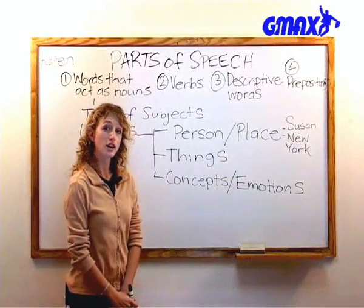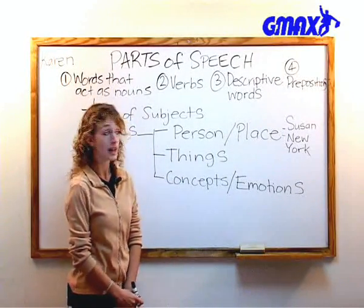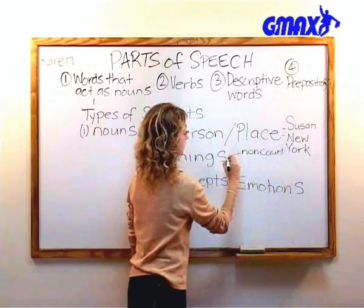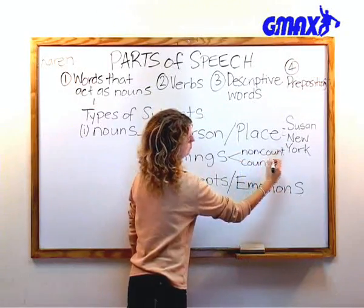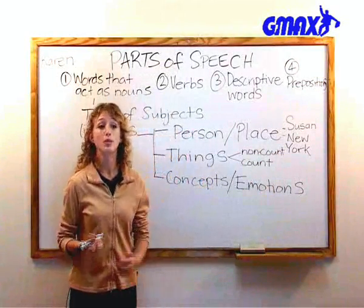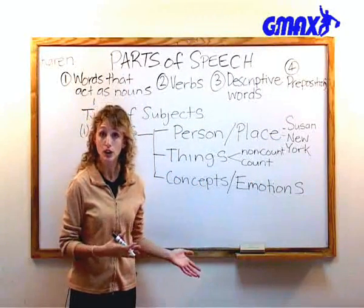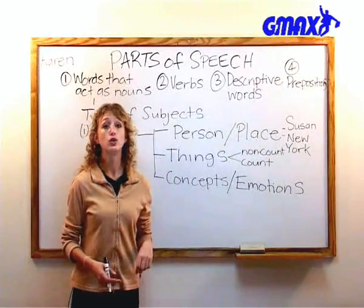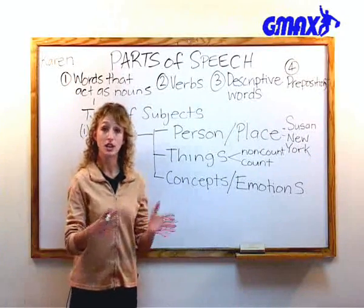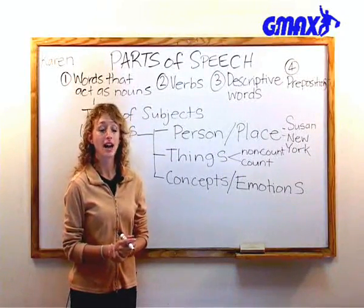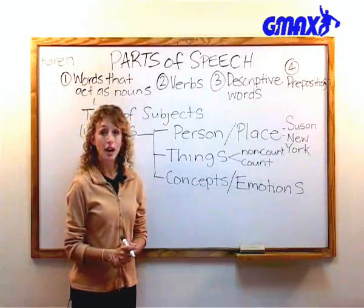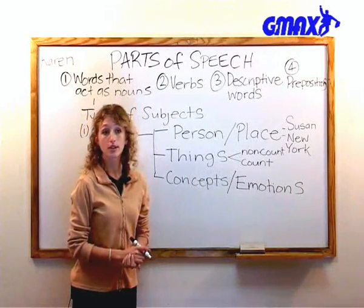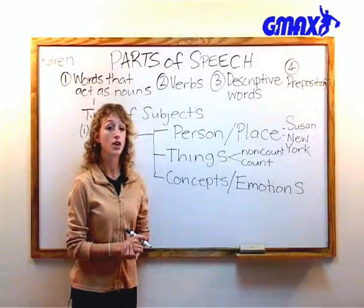Things can include both non-count and count nouns. Non-count nouns are things that we can't count unless we put them into containers. Such as water — I can't say I want two waters; I can say I would like two bottles of water. That's putting it into a container. Therefore, water is a non-count noun. Non-count nouns are always singular. Count nouns are basically anything you can count: three boys, two bananas, five books. These are all count nouns.